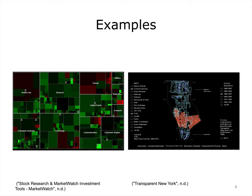Here are two examples of information visualization that became popular. One is Smart Money, which visualizes complex data on the performance of financial markets. The other one is an architectural history of Manhattan. Both of these visualizations are interactive and you can find them online.